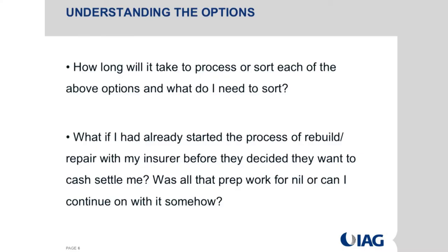How long does it take to process each of those options? It really depends on what your intention is and what your insurer already has about your property. If your insurer has all the reports - structural engineering and everything - and it's just a matter of discussing dollars, that might take four to six weeks, largely driven by you. You'd be given a figure, discuss it with your insurer, speak to your bank, your lawyer, your advisor, and do a bit of due diligence. If starting from scratch and having to get all those reports, it's probably about a three-month process.